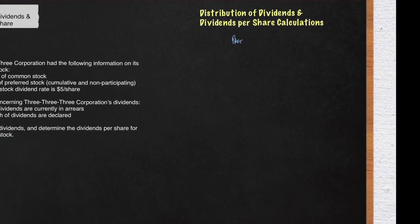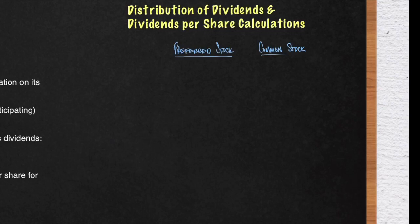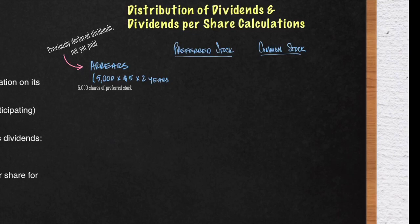What you want to do is organize a chart or table to keep track of what is being distributed to each shareholder. First, we're going to go over the arrears. Arrears is dividends owed from the past. In this case, we have 5,000 preferred stock shareholders times the dividend rate of $5, and they are owed two years in arrears. This will give you $50,000.